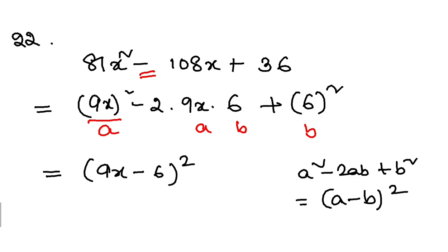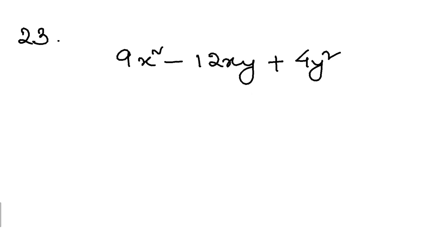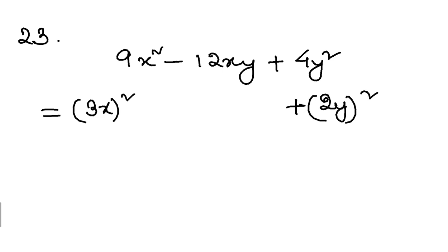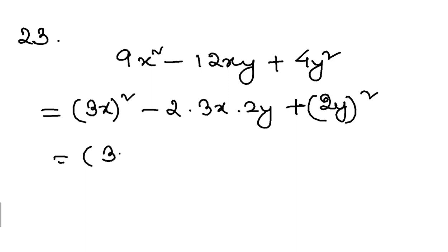Let's do question number 23, which is also similar. 9x square is 3x whole square. I can do it very quickly: 4y square is 2y whole square, minus 2 into 3x into 2y. 2 into 3 is 6, 6 into 2 is 12. So this is again a square minus 2ab plus b square, giving a minus b whole square. That is question 23.